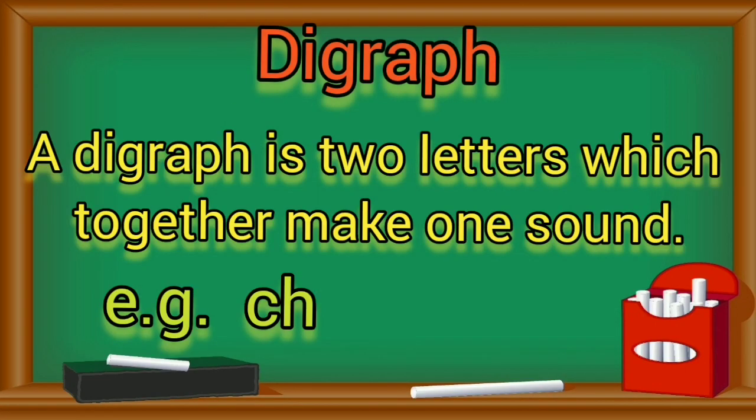Digraph. A digraph is two letters. It may be two vowels, or two consonants, or a vowel and a consonant, which together make one sound. For example, CH. This pattern says CH as in chin.